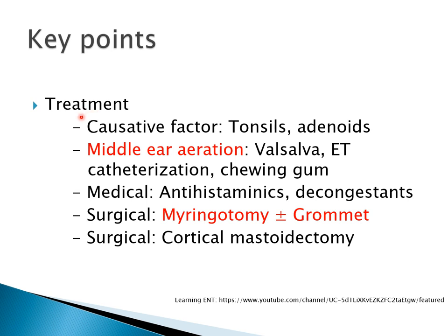Regarding treatment, the most important step is to remove the causative factor. In a child, if tonsils or adenoids are enlarged, these should be managed first. If there is nasal pathology like rhinitis, sinusitis, polyps, or deviated septum, that should be addressed. The patient should be encouraged to improve middle ear aeration by performing Valsalva, eustachian tube catheterization, and chewing gum to open the tube and improve aeration.